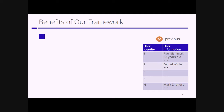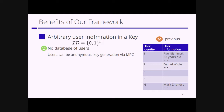In previous traitor tracing schemes, a user identity is just a number, so we need some correspondence between the user identity and user information. However, in our traitor tracing scheme we can embed arbitrary information in the key, so we don't need a database of users. If we generate a user secret key via, for example, secure multi-party computation, then our traitor tracing scheme can be anonymous. This is a benefit of our framework.